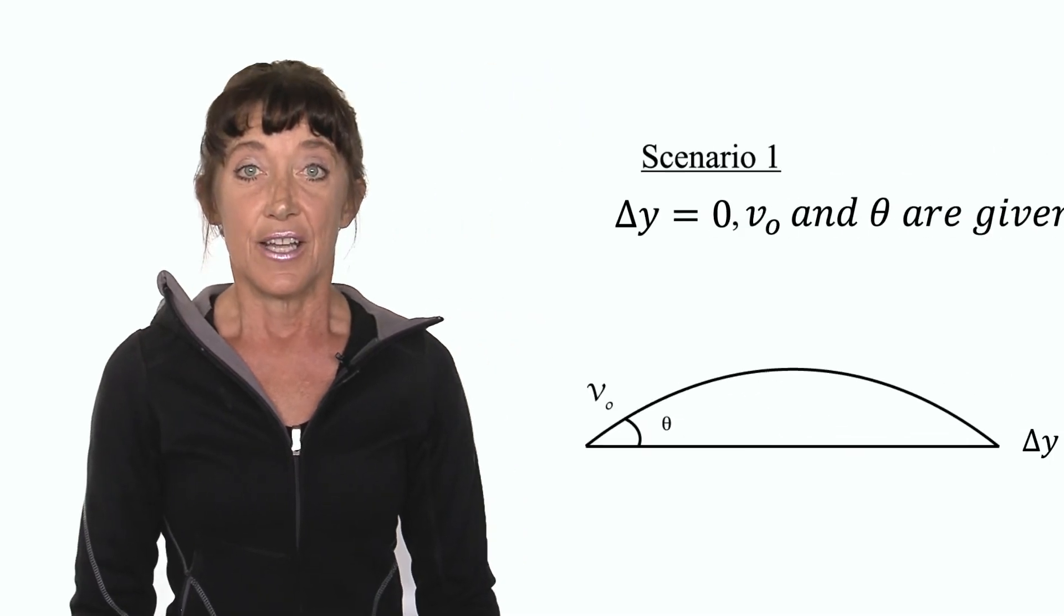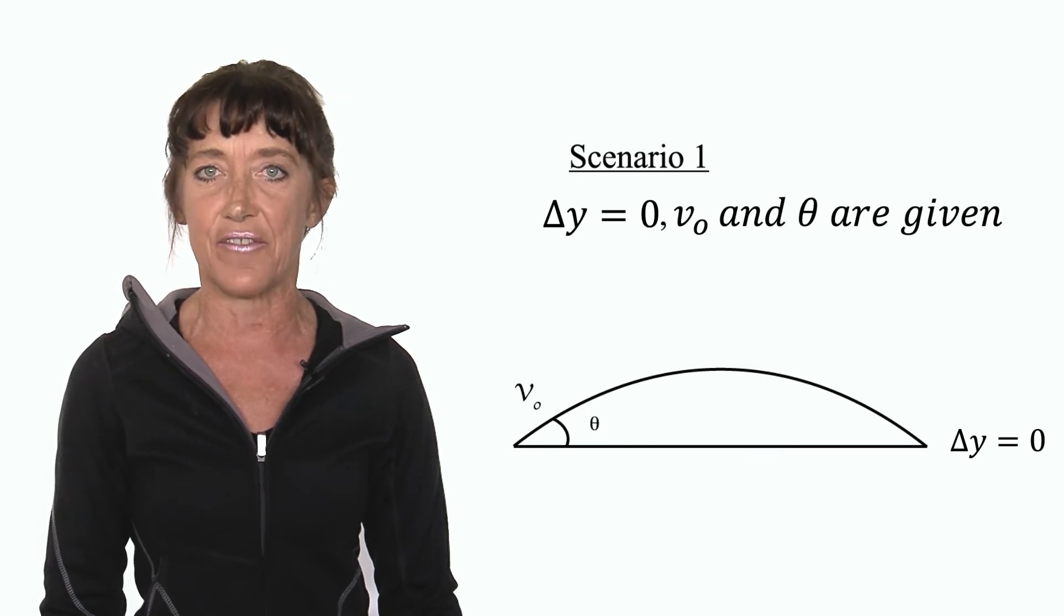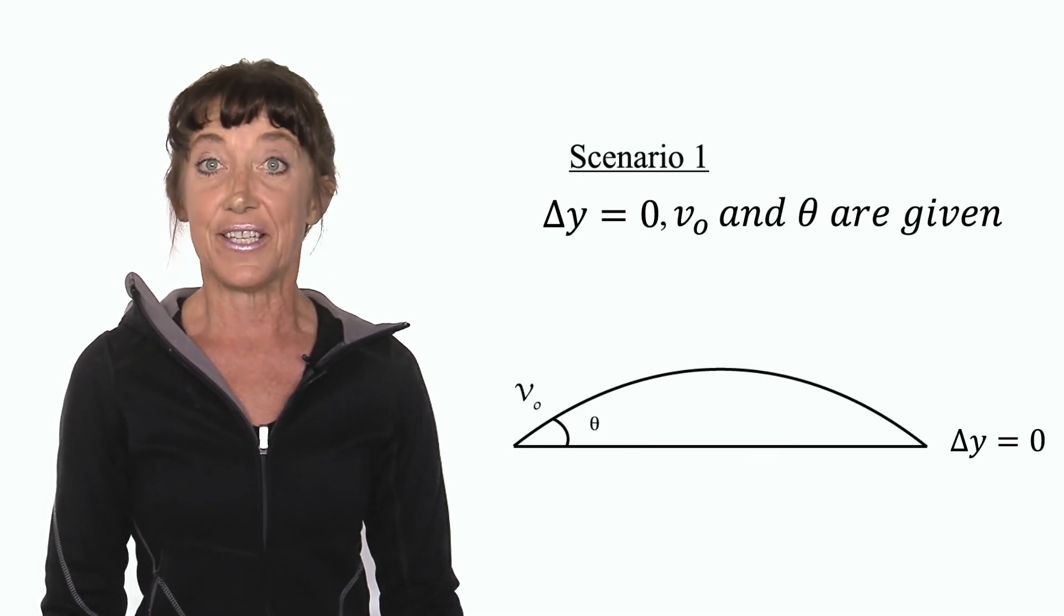Finally, it is important to note that these problems will be problems that have constant acceleration. In the following exercise, we'll solve problem one. It's a simple projectile problem in which the vertical displacement is zero and the launch angle and initial velocity are given. Please stay tuned.